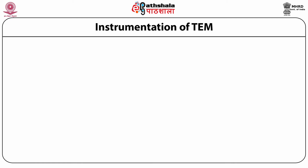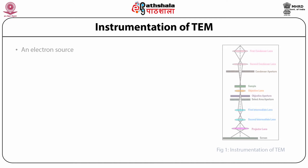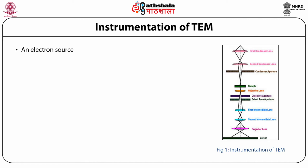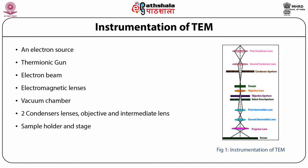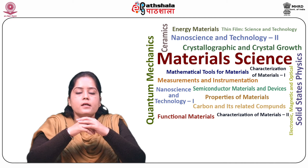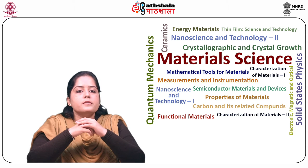This figure shows the instrumentation of TEM, where there is a source of electrons — a gun based on thermionic emission — a beam of electrons, electromagnetic lenses, a vacuum chamber, two condenser lenses, objective and intermediate lenses, a sample holder and stage. The imaging device is a phosphor or fluorescent screen interfaced with a computer.